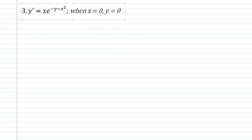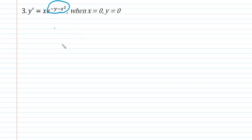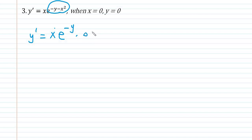We are down to our last example: y prime is equal to e raised to negative y minus x squared. This problem might seem a little tricky because of this expression, e raised to negative y minus x squared. But remember, that could also be written as e raised to negative y times e raised to negative x squared.